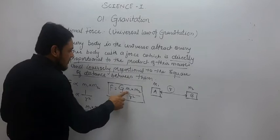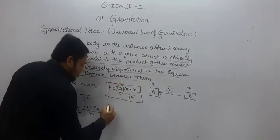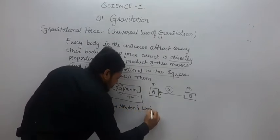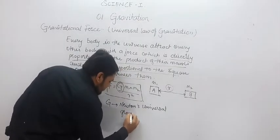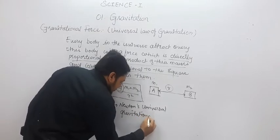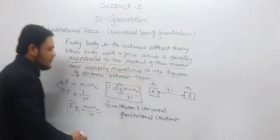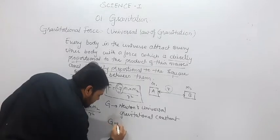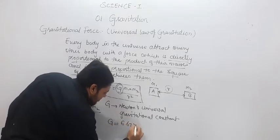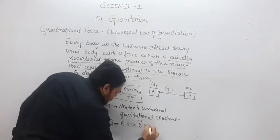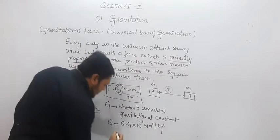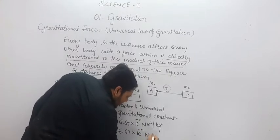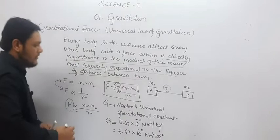In this formula, F equals G times m1 times m2 divided by r square, where G is a constant. This G is called Newton's universal gravitational constant, or the universal constant of gravitation. The value of G is equal to 6.67 multiplied by 10 raised to the power minus 11 Newton meter square kg raised to the power minus 2.